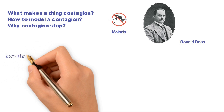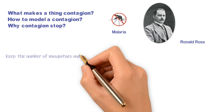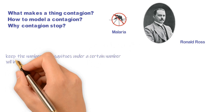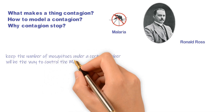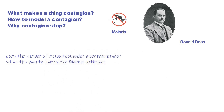Ross then wanted to prove that keeping the number of mosquitoes under a certain number would be the way to control the malaria outbreak. He even performed an experiment on an Egyptian city. By controlling the number of mosquitoes, there were only 100 infection cases that year, compared to the normal 2,000 cases per year.